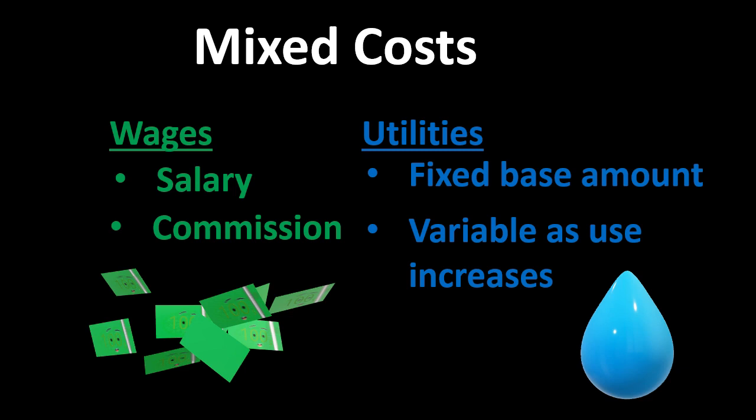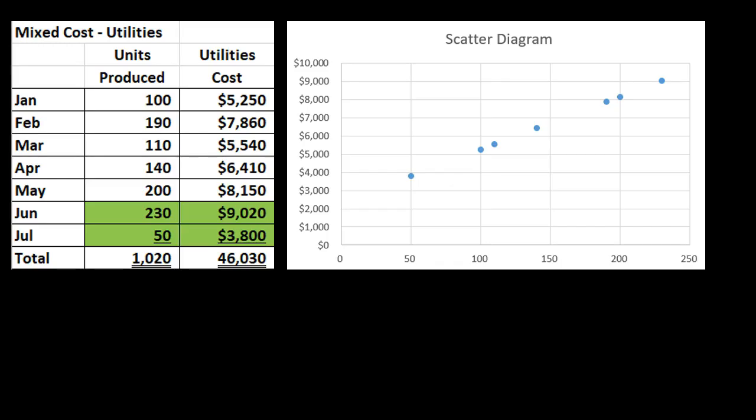We then need to break out the fixed and variable components. The question is, how do we do that? How do we think about what is fixed and what is variable? One way to do it is just to plot some points on a graph and think about what those points look like with relation to that graph.